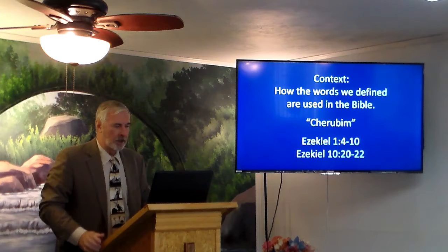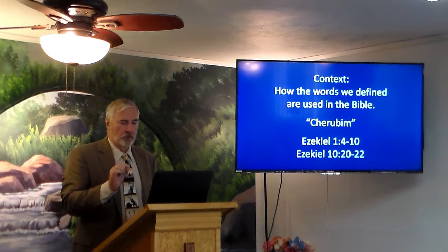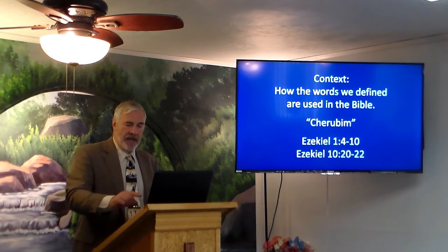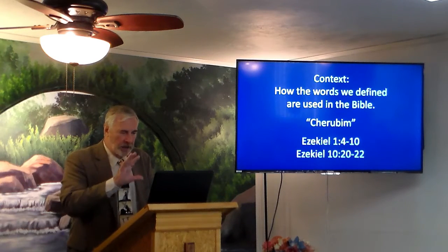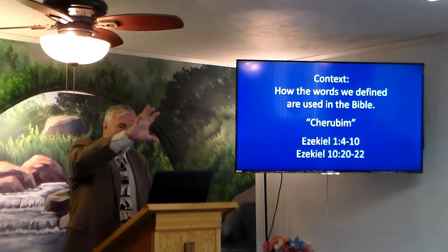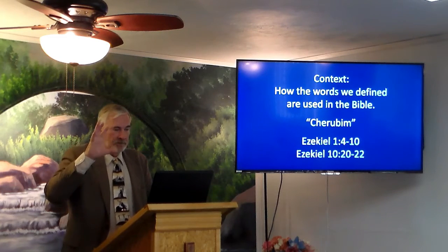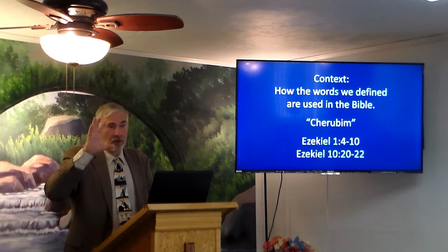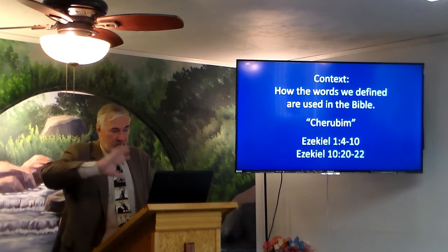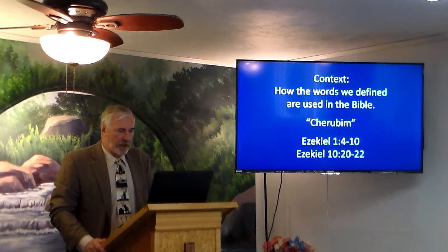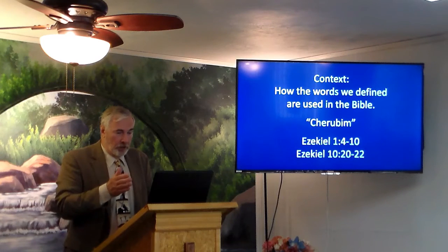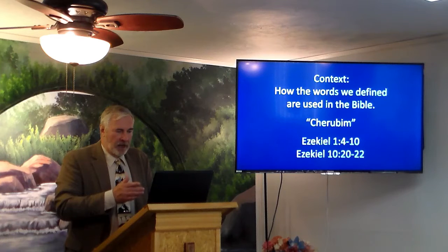So cherubim are near God's throne. They have multiple wings, reflect God's glory, and follow his commands. Ezekiel 1:4-10 — Ezekiel, by the river Kebar in Babylonian captivity, sees: 'A stormy wind came out of the north, a great cloud with brightness around it, fire flashing forth continually, and in the midst of the fire as it were gleaming metal. From the midst of it came the likeness of four living creatures.'